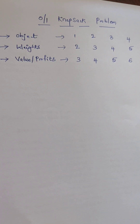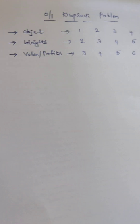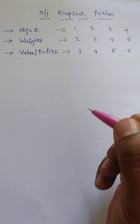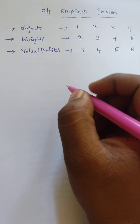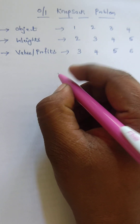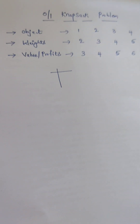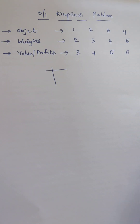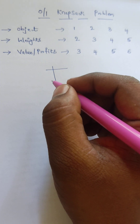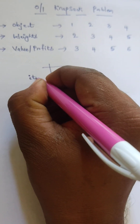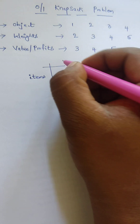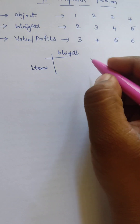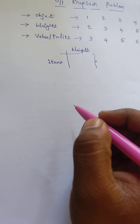Now we need to check the matrix representation for the 0/1 knapsack problem. This matrix representation is purely based on the values we have already taken. With respect to the rows, we take items as rows, and with respect to the columns, we take weights as columns.